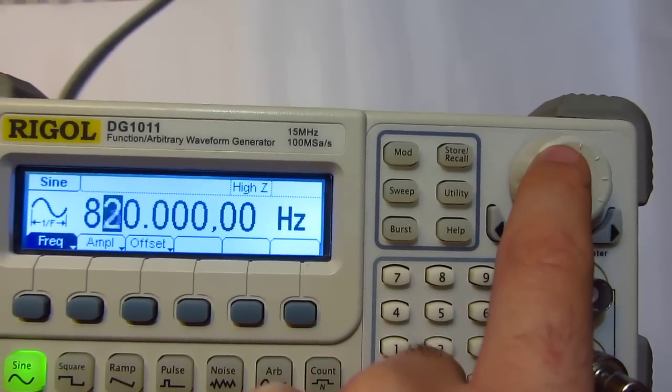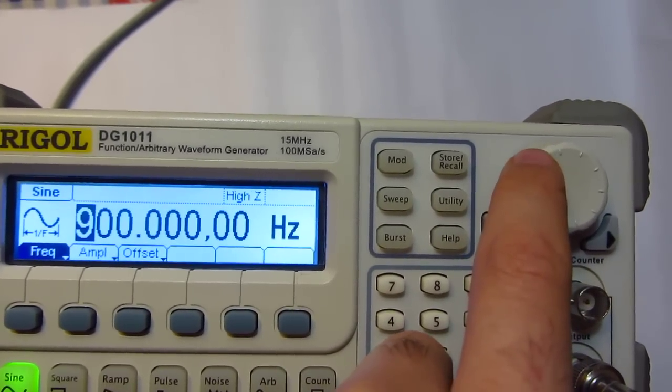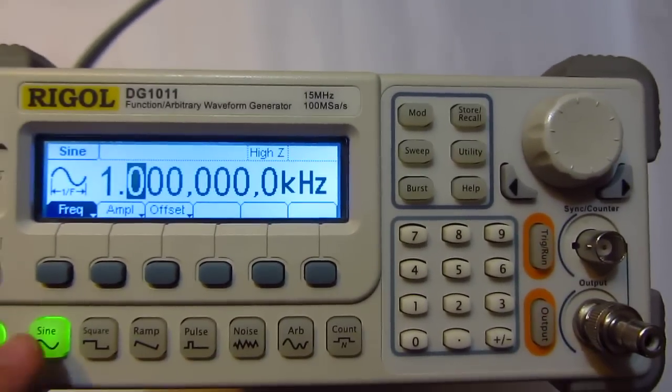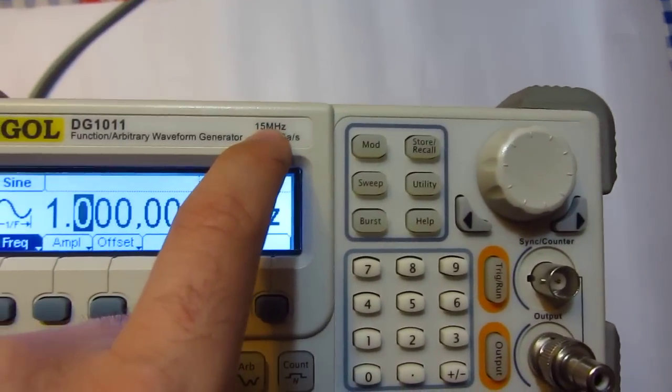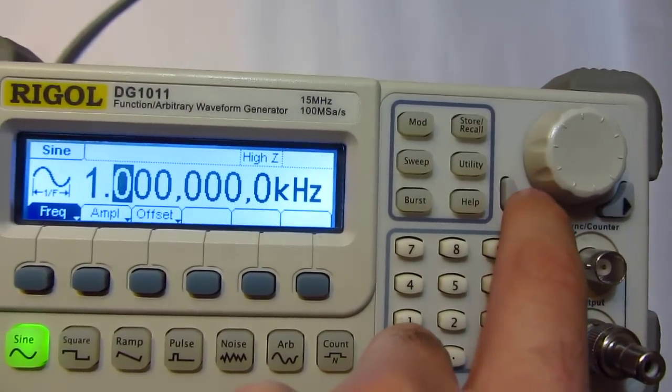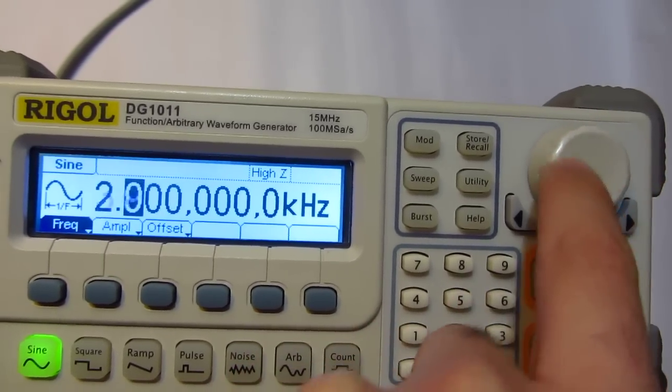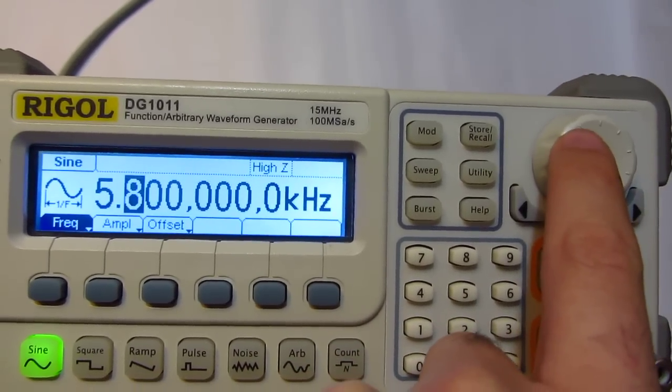Let's set it to zero and increase this one - it jumps to kilohertz scale. On the sine wave it goes up to 50 megahertz, so let's make a faster movement: 2 kilohertz, 3 kilohertz, 4 kilohertz. This will take a lot of time.